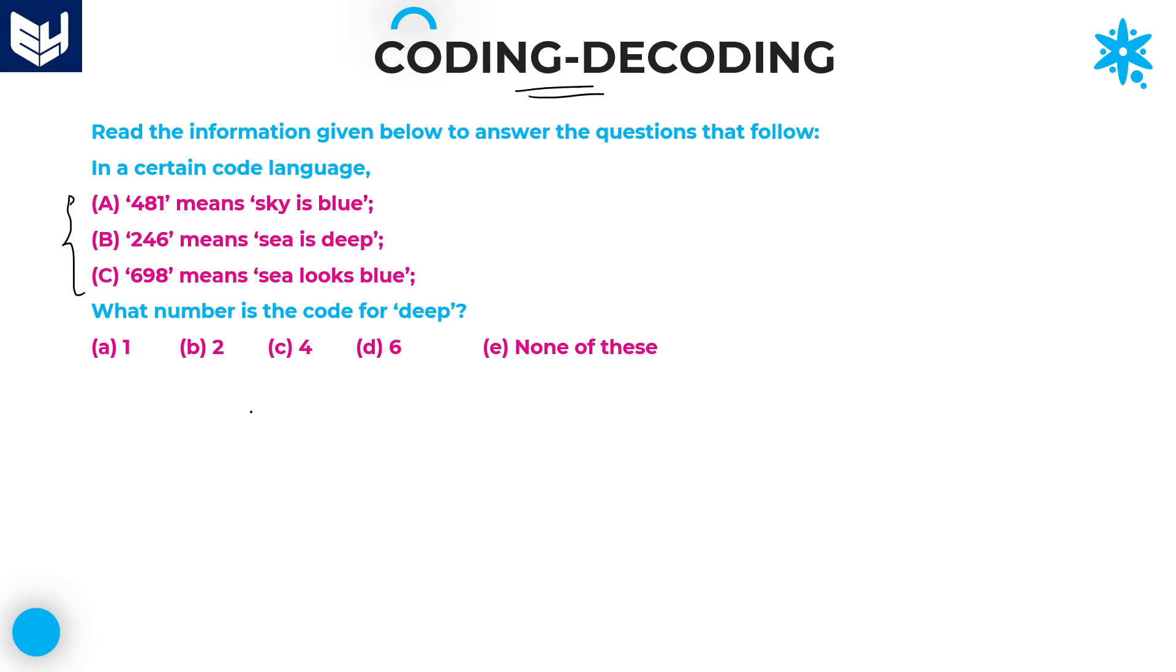First of all, write down all the different words. First one is 'sky is blue' - sky, is, blue. Second one - sea is deep. After that, sea looks blue. Now total we have six different words.